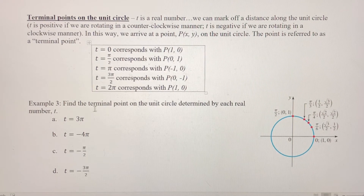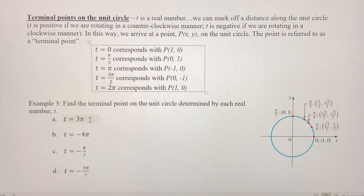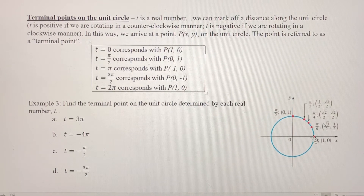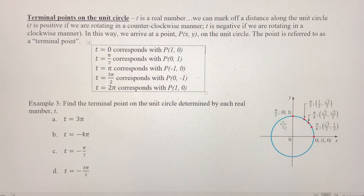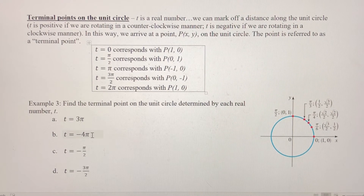We're going to use the graph and answer parts A, B, C, and D. The first value is 3π — notice it's not one of our standard angles, it's a little more than one revolution around. We need to find the terminal point for any of these values for T. In this video we stick to values on the axes, so the answers will be one of the four axis points. The values are: 3π, -4π, -π/2, and -3π/2.